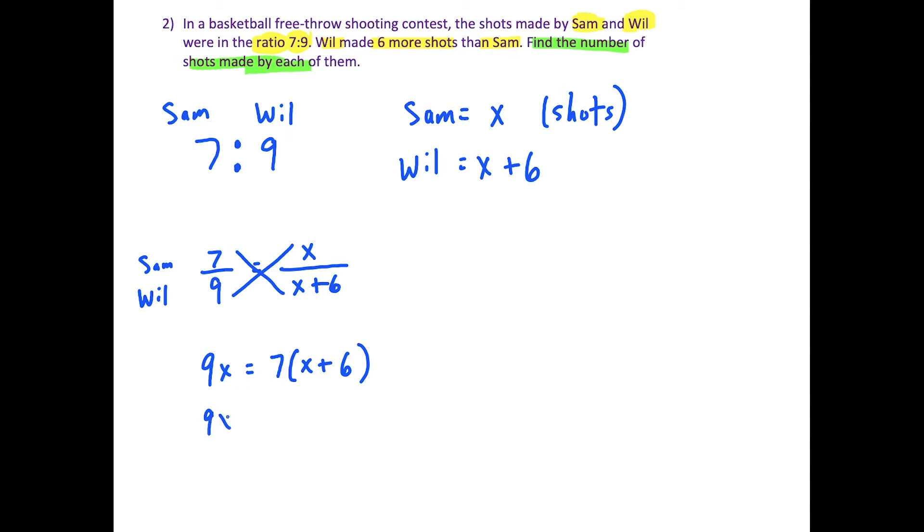So then let's work this out. This is 9x equals 7x plus 42. Remember, just make sure to multiply 7 by x and positive 6. Now we subtract 7x on both sides.